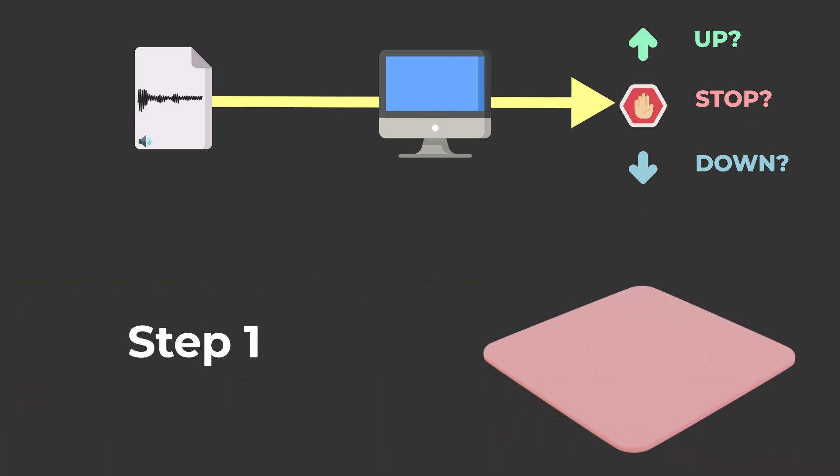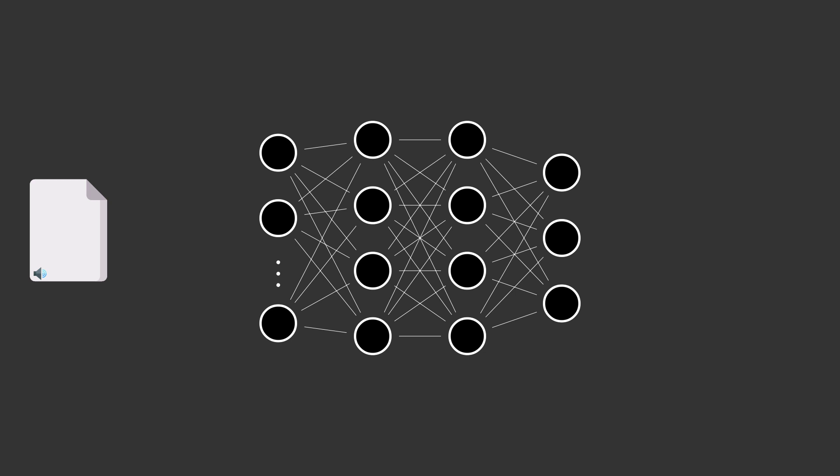The first step is to formulate this machine learning task as a mathematical optimization problem. For example, you can work with a neural network whose weights are unknown variables,